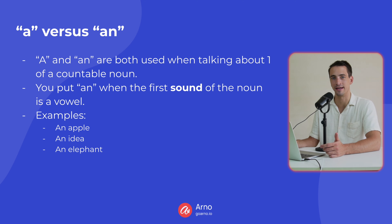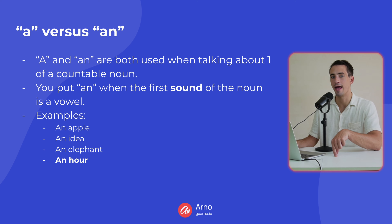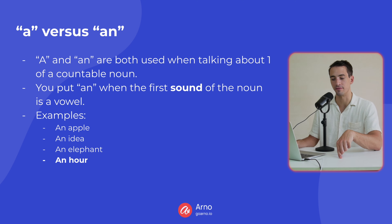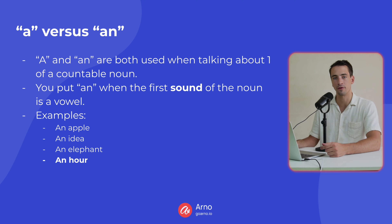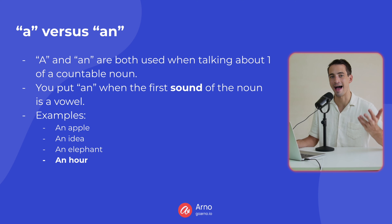'An elephant' — same thing. In all these examples, the first sound is a vowel. However, with a word like 'hour,' the first letter is H, but the H is silent, and the first sound is a vowel sound. Which means we put 'an' in front of it — 'an hour' sounds better than 'a hour.' Because 'a' followed by a vowel sound requires us to kind of cut our voice, and it doesn't sound good.